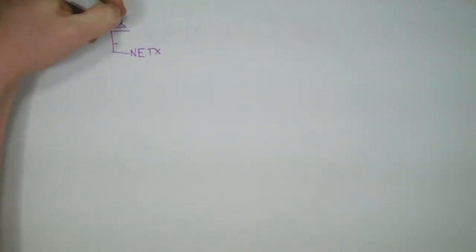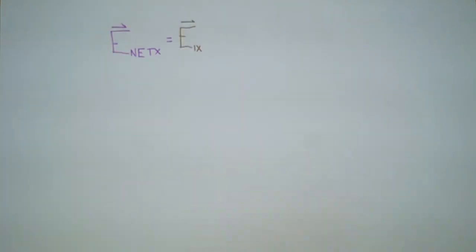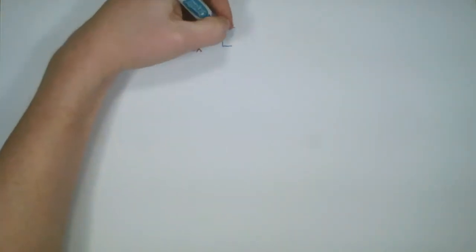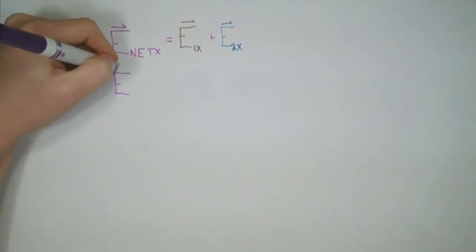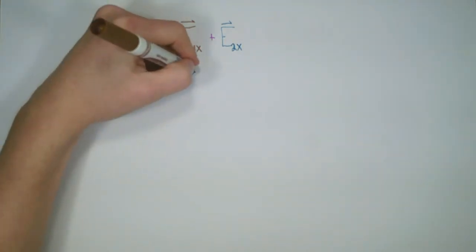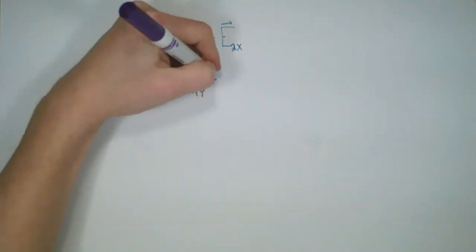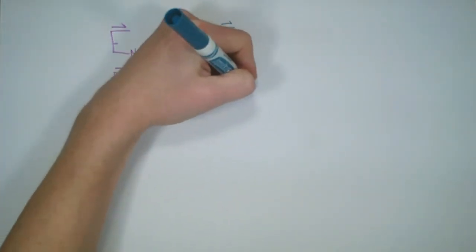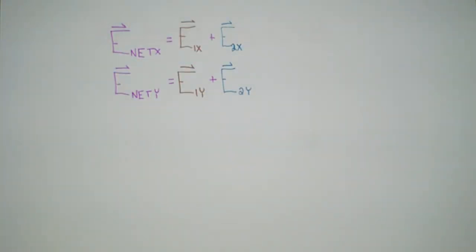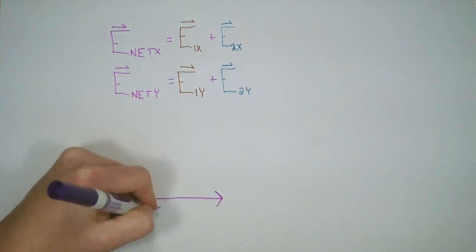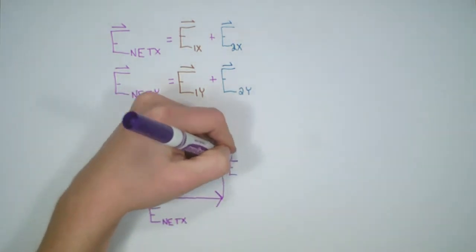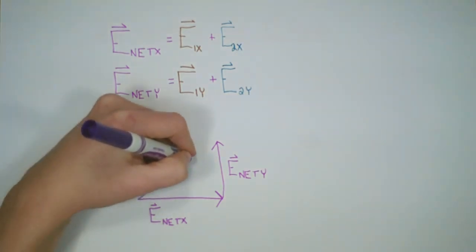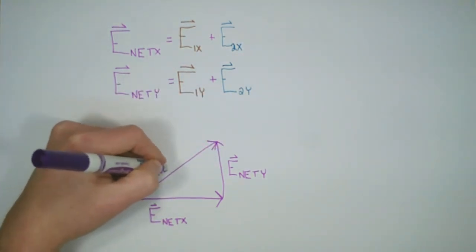Now we simply put things together. The net x field equals E1x plus E2x, giving us the net field in the x direction. The net field in the y direction equals E1y plus E2y. Assuming both values are positive, E net x points to the right and E net y points upward. The resultant connects the tail of E net x to the head of E net y.